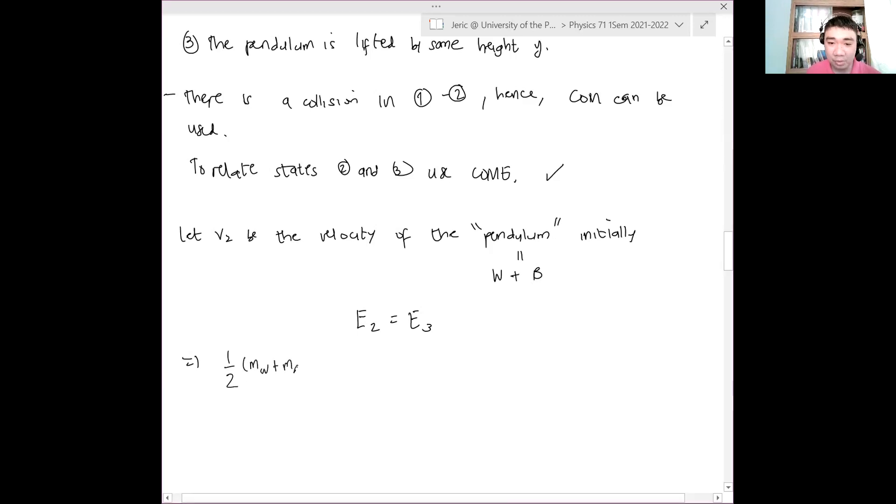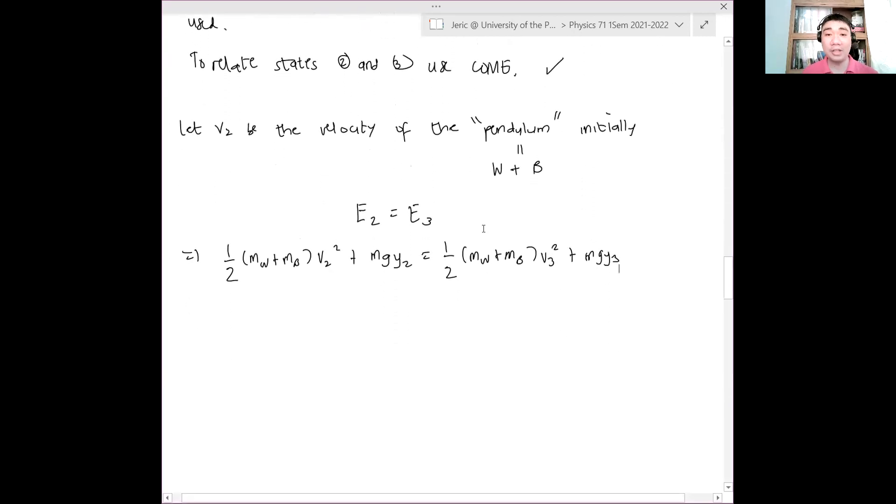So one half MW plus MB, V2 squared plus mg Y2 equals one half MW plus MB quantity V3 squared plus mg Y3. Now, what can we say about the initial velocity or the height of the pendulum at state two? What can we say? Zero. Zero, correct. Because we said it that way. So this should be zero.